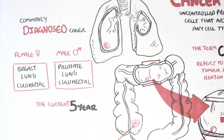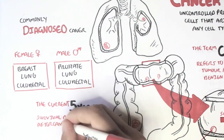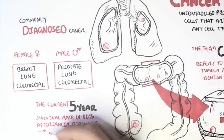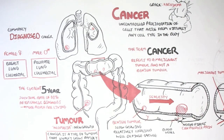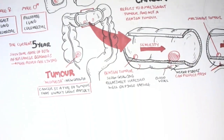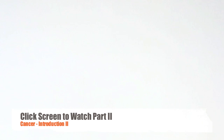The current 5-year survival rate of 60% after cancer diagnosis means that people are living, and this is great. Hopefully in the near future, there will be improved treatment and interventions that will help people with cancer to survive longer and in comfort. Now let's look a little bit more about the pathophysiology and progression of cancer, focusing on a malignant tumor.